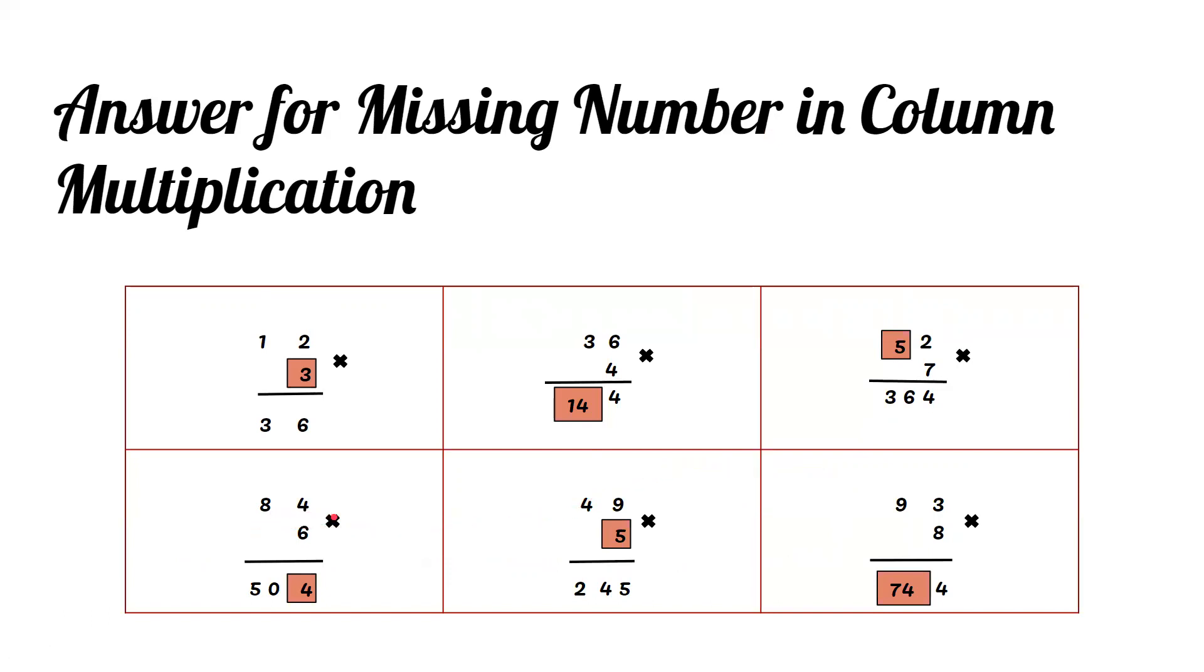84 times 6 equals 504, 49 times 5 equals 245, 93 times 8 equals 744.